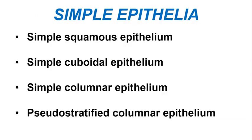There are four types of simple epithelia in the human body: the simple squamous epithelium, the simple cuboidal epithelium, the simple columnar epithelium, and finally the pseudostratified columnar epithelium.